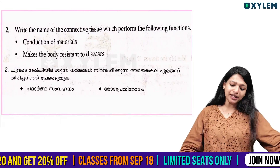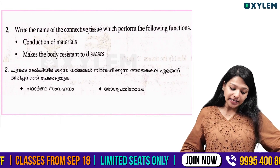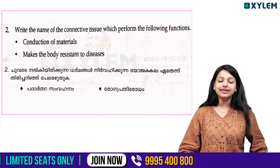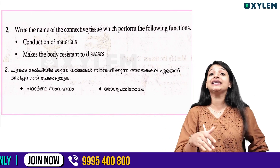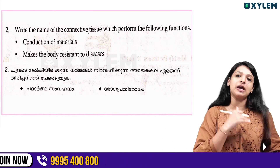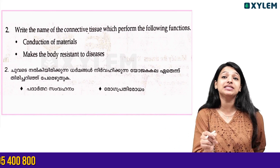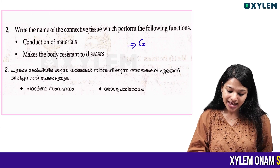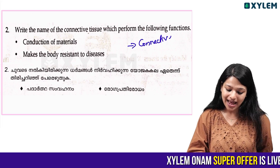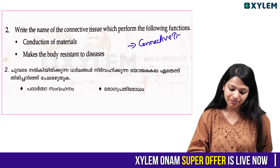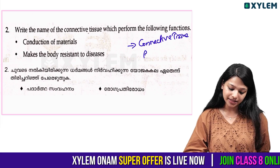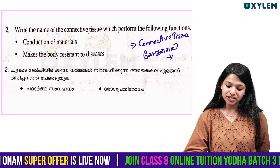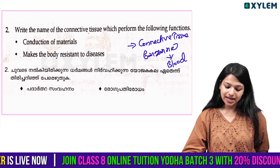In the second question, write the name of connective tissue that performs the following functions: conduction of materials, and it makes the body resistant to diseases. This connective tissue is blood.